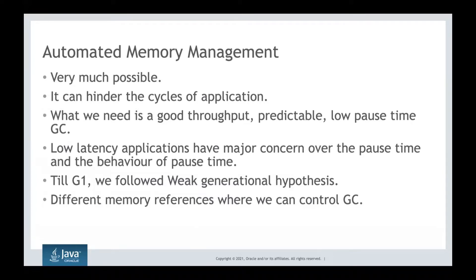Currently in Java, as we are on the verge of Java 18, the default garbage collector is still G1, which kind of satisfies all requirements — an okay pause time and okay throughput and application efficiency. There are many garbage collectors other than G1 that can give you better pause times, and we are going to discuss one of those.